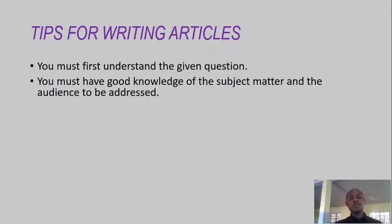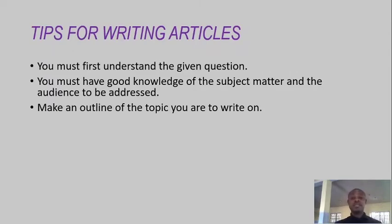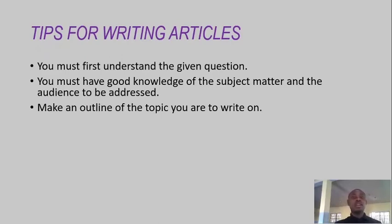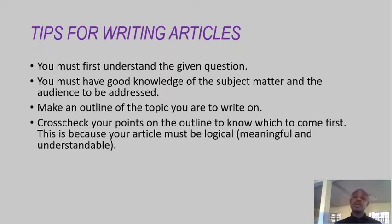Also, don't forget your audience — they are the people who will read it, so you must put them into perspective in order to use language suitable for them. That's when we talk about diction — choosing the right word to use. Make an outline of the topic you want to write on; this is very, very important. An outline is a guideline that gives you a neat and organized work. You need to plan an outline with the title, topic sentences in bullet form, and supporting sentences. Without it, you may end up giving a disorganized work. Check your points on the outline to know which should come first, because your article must be logical, meaningful, and understandable.